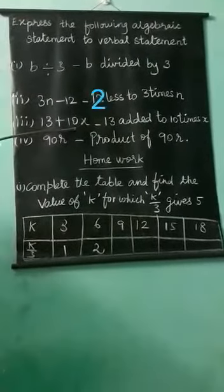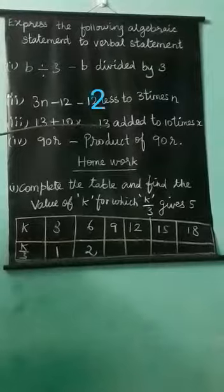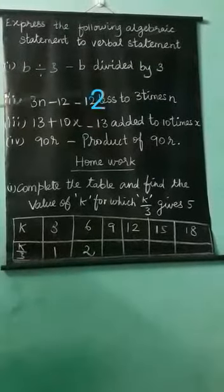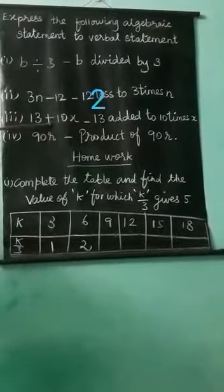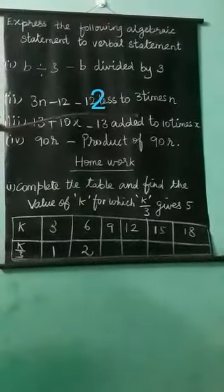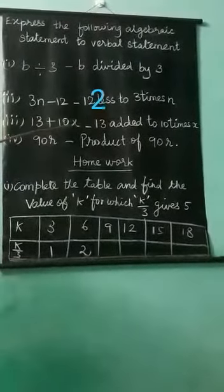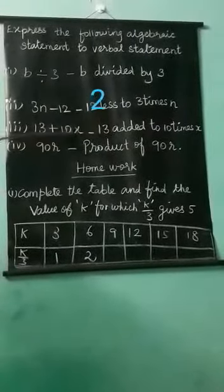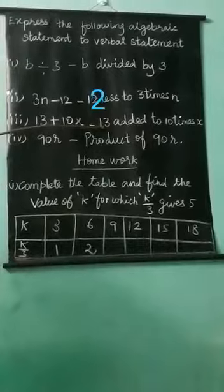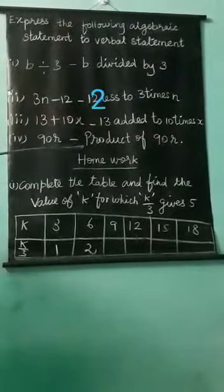Third one, 13 plus 10X. How to write this verbal statement? What is the symbol here? Plus symbol. So, we write 13 added to 10 times X. 10 times 10 into X. Because 10 into X here, 10 into X. So, we write 13 added to 10 times X. Understood?